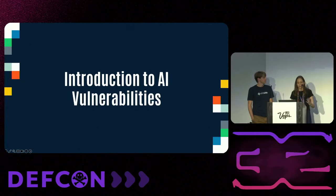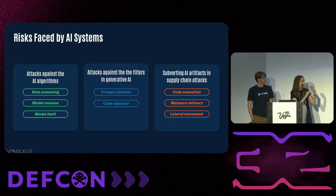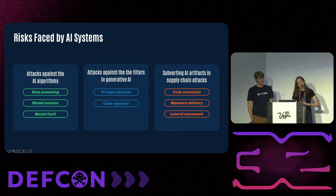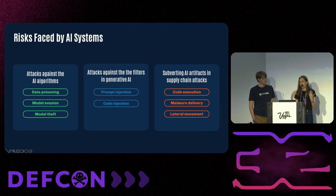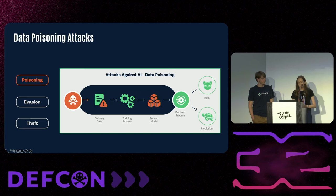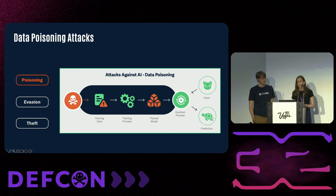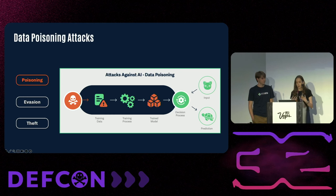Let's dive down the rabbit hole of AI vulnerabilities. We'll go into each section so we're all on the same page. First, attacks against AI algorithms, then attacks against filters and generative AI, then Cas will cover AI artifacts and supply chain attacks. Data poisoning attacks — model training is crucial for AI development, and it's incredibly vulnerable. Malicious actors tend to manipulate or inject corrupt data to bias the model's behavior. Continuous learning systems are especially at risk as they retrain on unvalidated user-supplied data. Even small amounts of poison data can lead to biased or incorrect predictions, amplified by public manipulation or botnets.